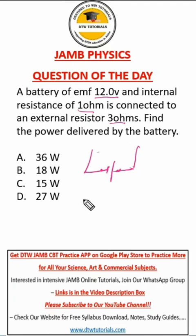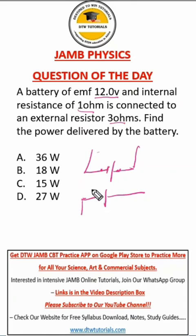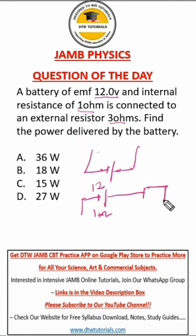But when it is delivering current, we have something like this — where from our question, this is the battery, the EMF is 12 volts, and the internal resistance is 1 ohm, and it is delivering current to an external resistor of 3 ohms.